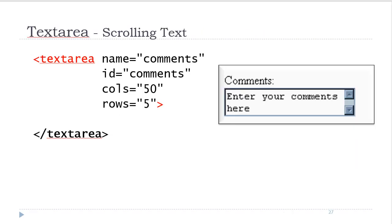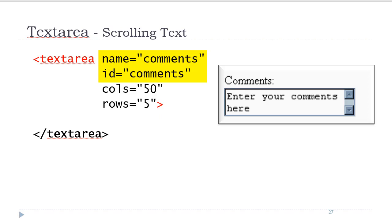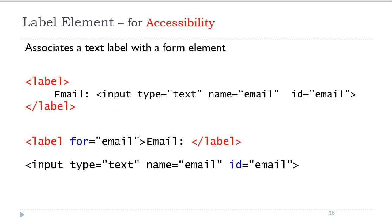A larger text area that allows you to scroll is created using the opening and closing text area tags. This element needs a name attribute and an ID attribute, as all HTML form elements do. The size of the text area can be configured by using the cols attribute and the rows attribute. However, it also can be configured using CSS width and height.